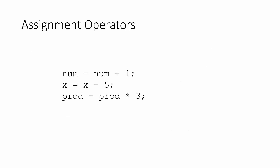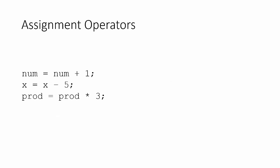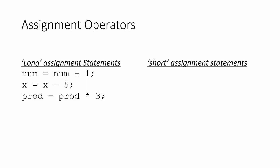Let's take a look at these three particular statements — our long assignment statements we've been using thus far. We can see that num equals num plus one can be shortened down to num plus equals one. This is our addition assignment operator. X equals x minus five can be shortened to x minus equals five — that's our subtraction assignment operator. And prod equals prod times three can be shortened to prod times equals three, which is our multiplication assignment operator.